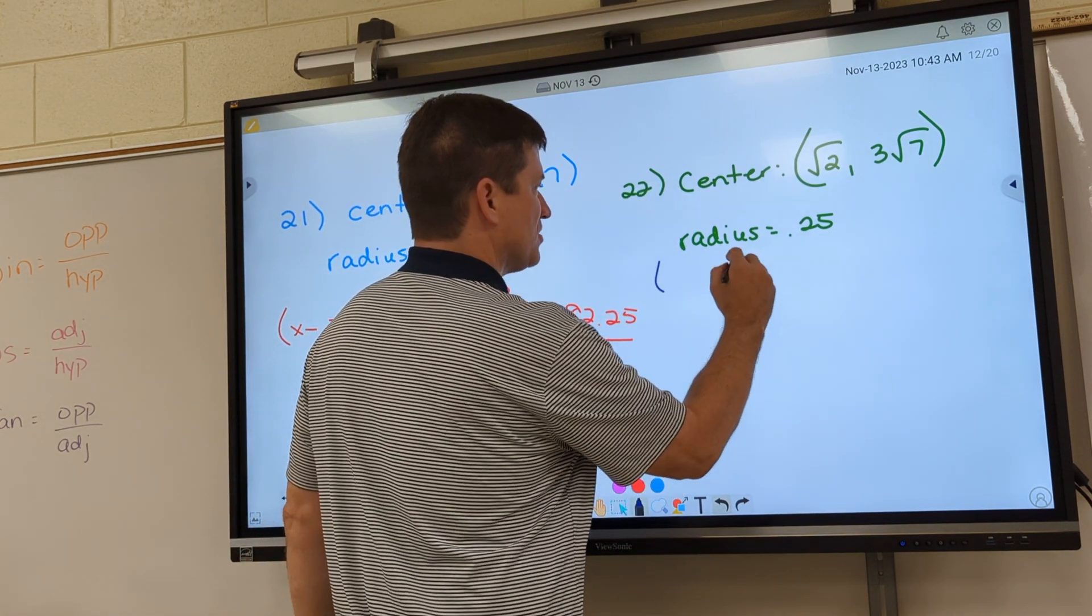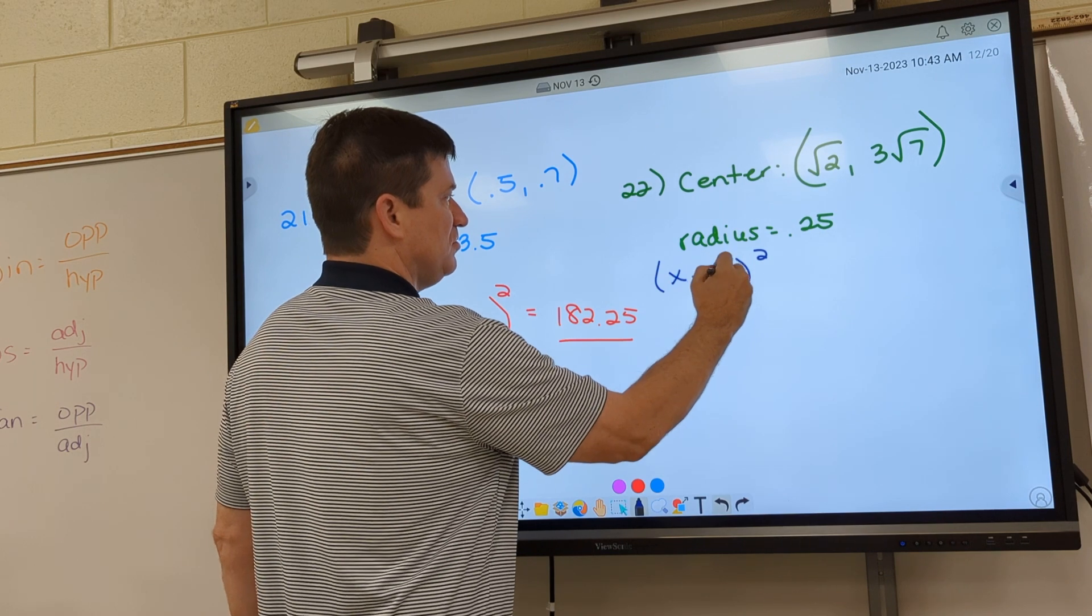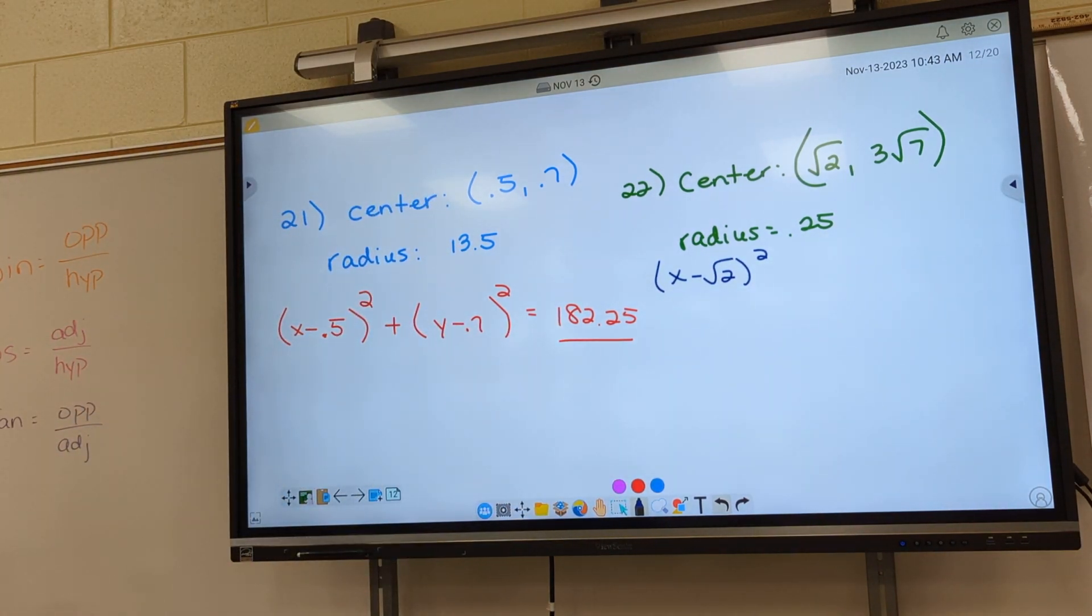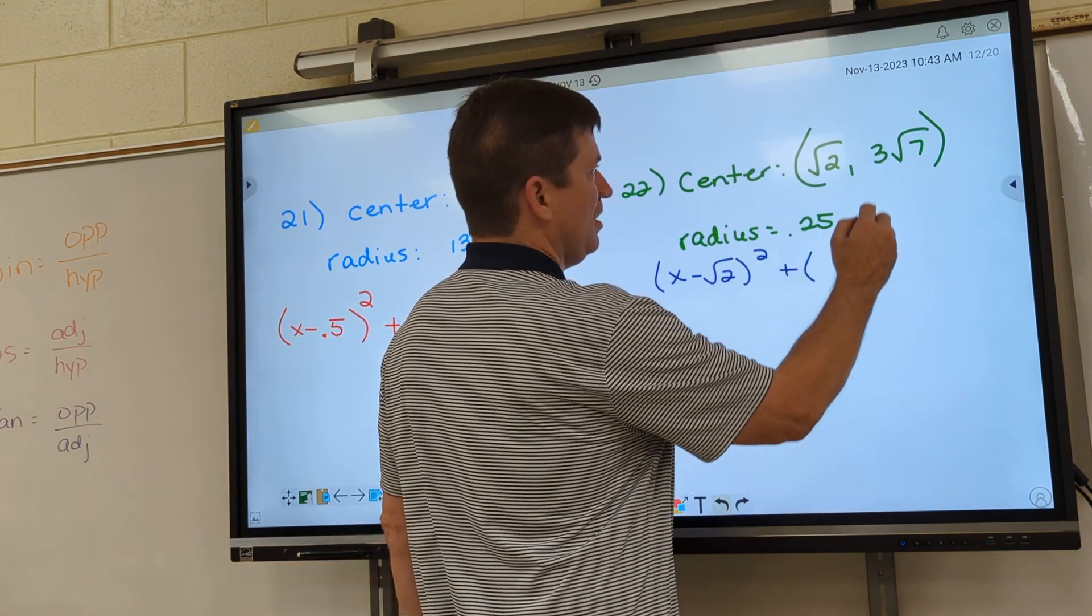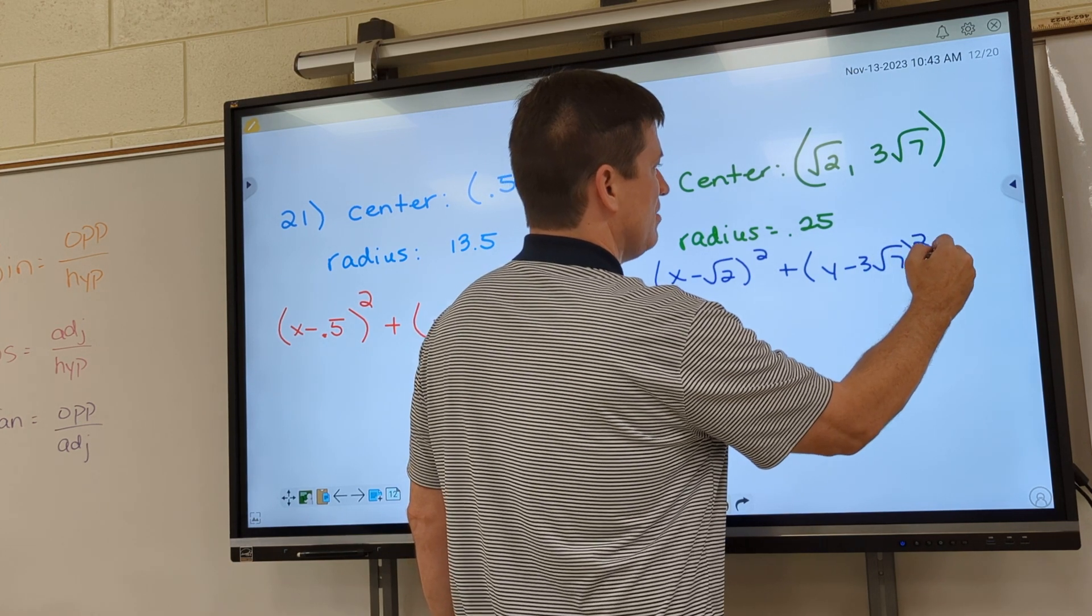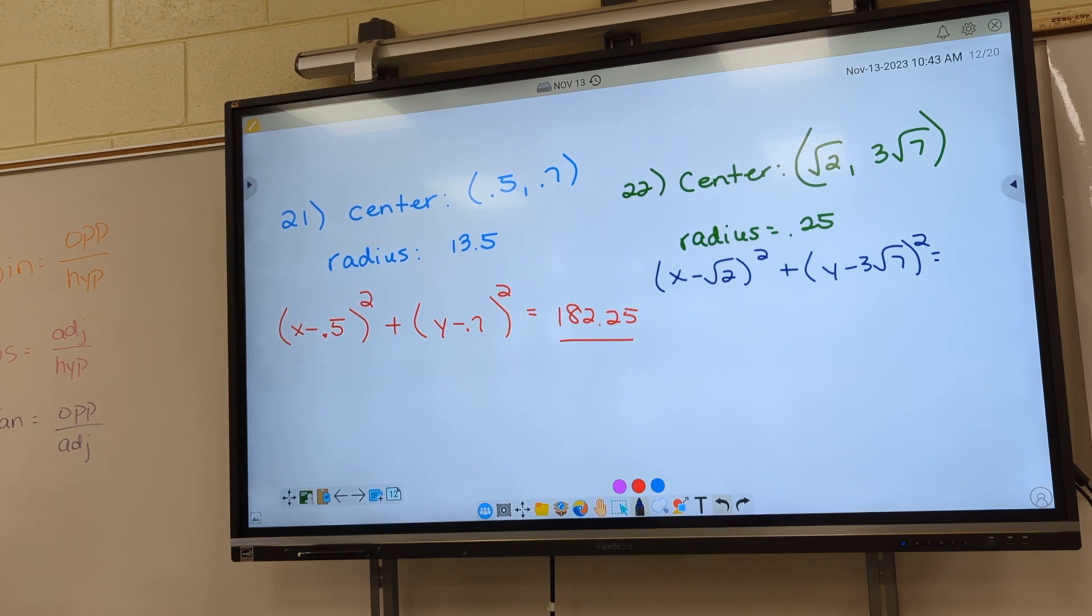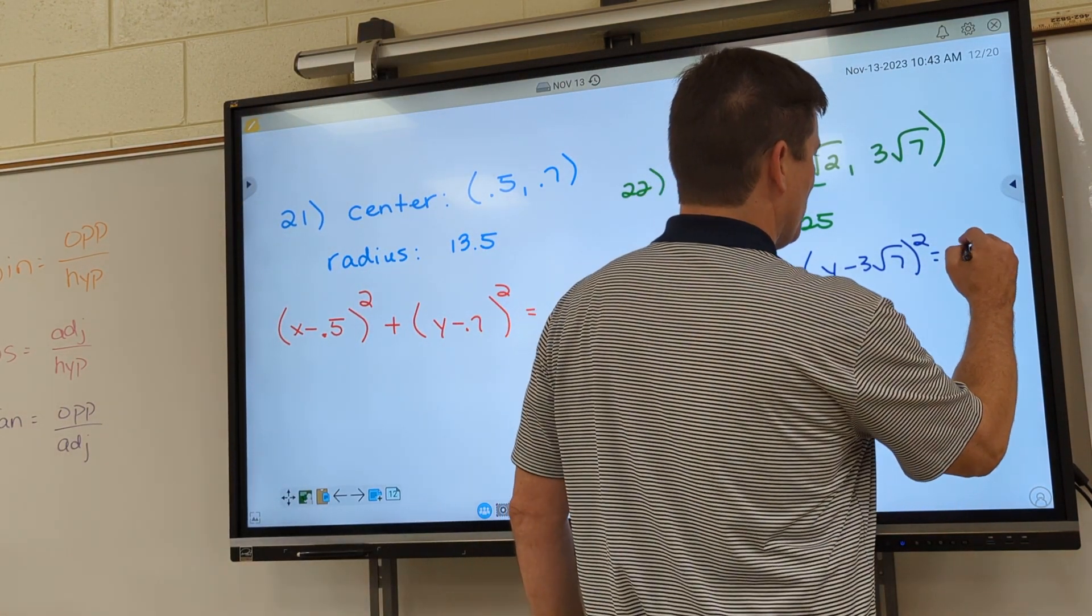All right, so what goes in the first parenthesis? It's going to be x minus root 2. Okay, well, it goes in the second parenthesis. It's going to be y minus 3 root 7 squared. 0.0625. How did y'all get that? Square. Square that number, 0.0625.